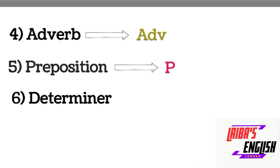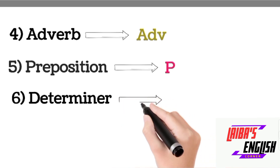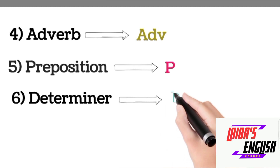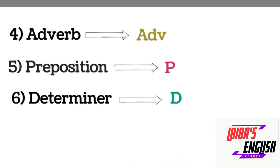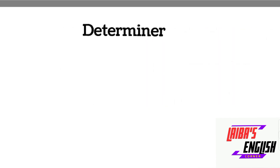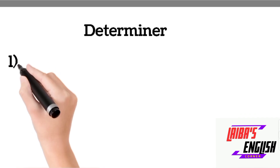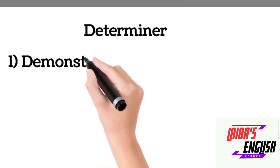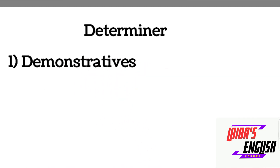The sixth lexical category is determiners, which include multiple things you have to keep in mind. Determiners will be denoted by D. Determiners consist of four important things. Some important things about determiners are that they are mostly required, they are not used more than once in a sentence, and they mostly belong to the closed class category.